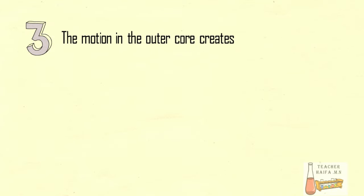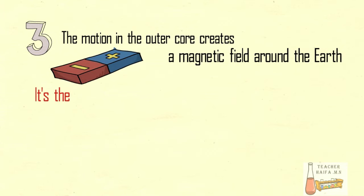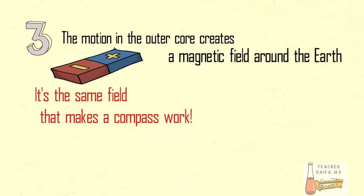The motion in the outer core creates a magnetic field around the Earth. It's the same field that makes a compass work.